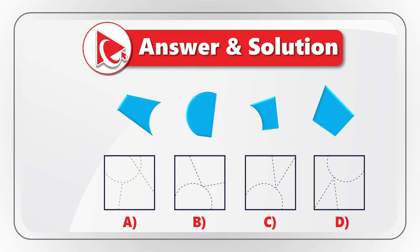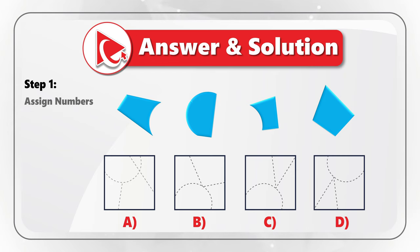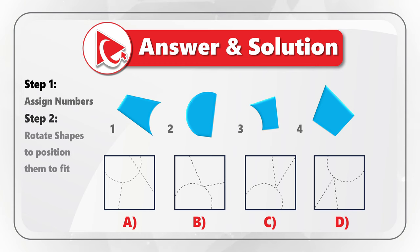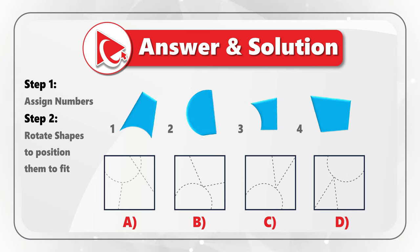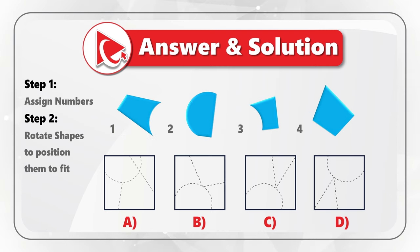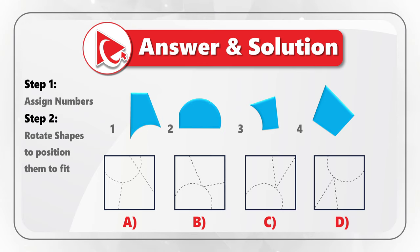Let's look at the example. Let's first assign each shape a number. Because we have four shapes, the numbers will be one, two, three, and four. The second step is the hardest — you need to rotate the shapes to position them to fit, and find the closest square which fits all the shapes. Let's rotate each shape to get them into the correct position: shape one, shape two, shape three, and shape four.